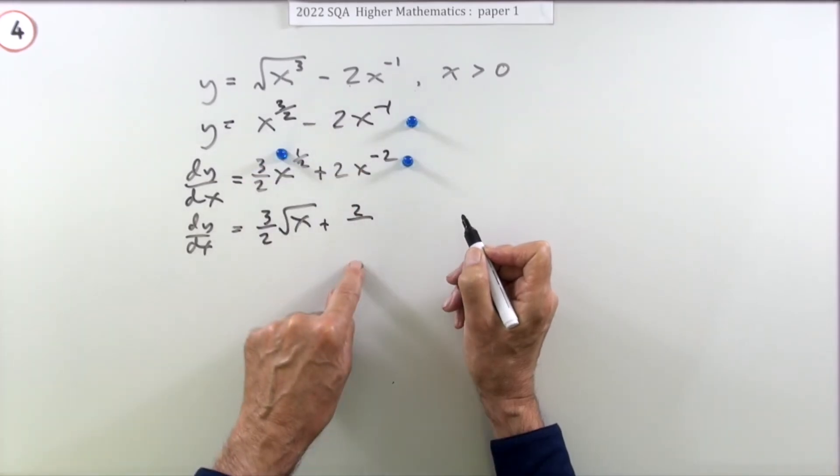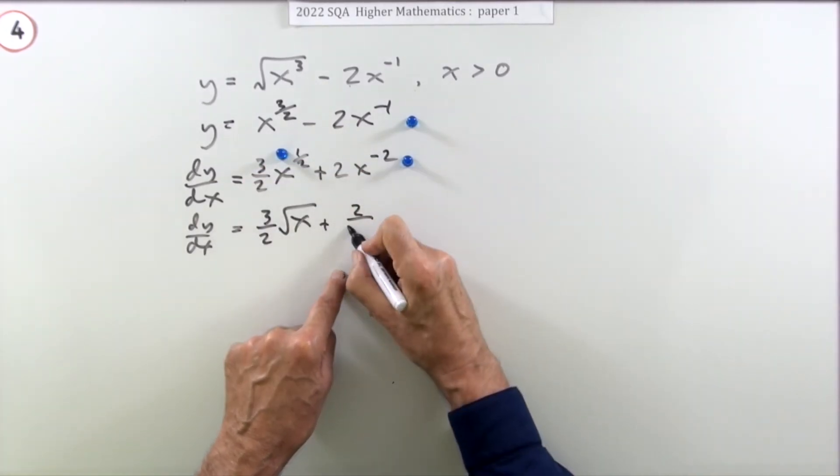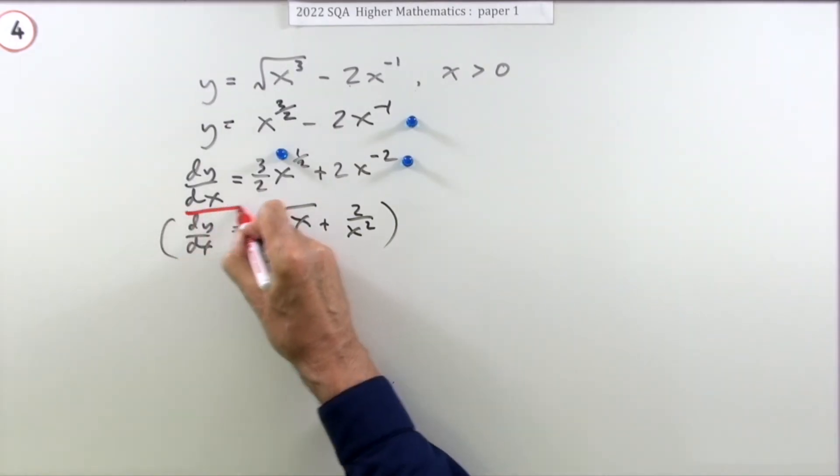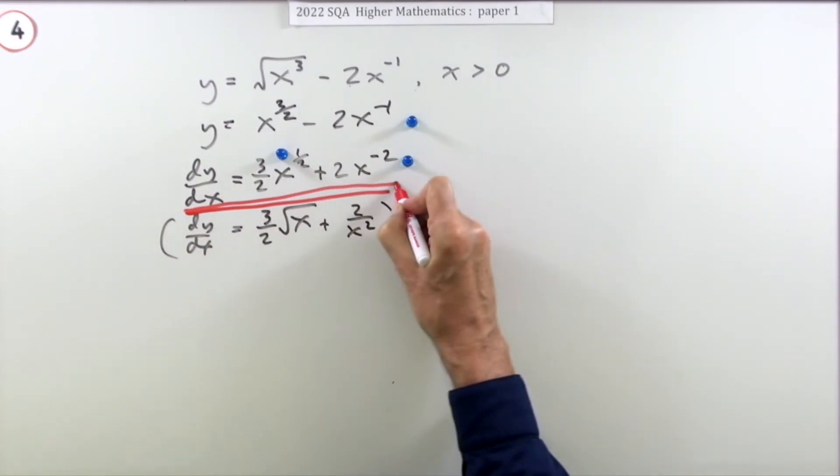Negative means it should really be underneath. So it's an underneath x squared. But they didn't ask for that. So that does there. Here we go.